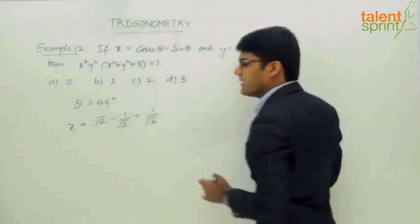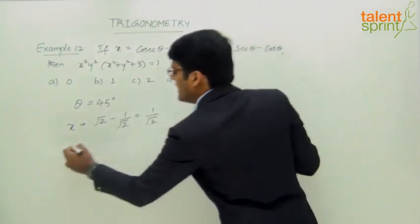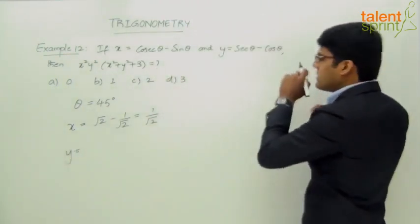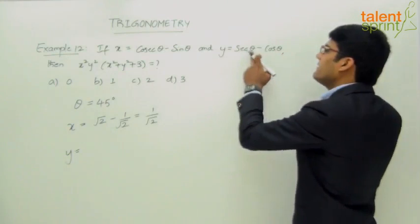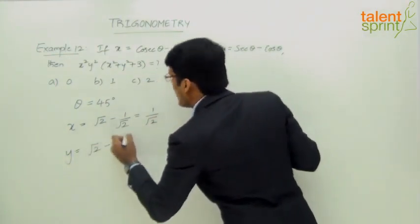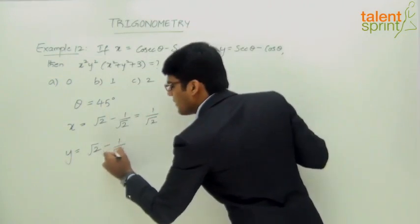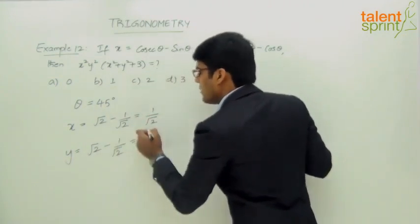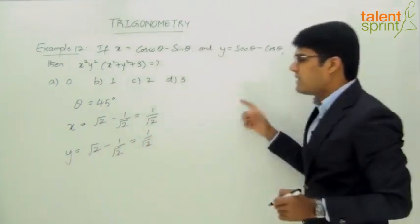y equals secant θ - cos θ, which means secant 45° - cos 45°. This gives us the same value again - secant 45° is √2 and cos 45° is 1/√2, so y = 1/√2. So x = 1/√2 and y = 1/√2.